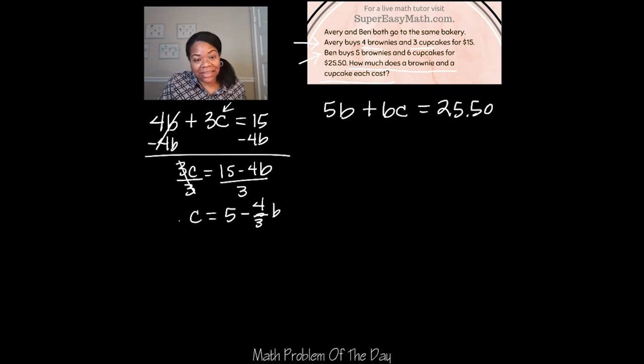Now I'm going to take this value that I just calculated for C and plug it into the new problem. So what I'm going to do is rewrite this problem but instead of writing C I'm going to write what I just calculated C to equal, which is the 5 minus 4 thirds B.